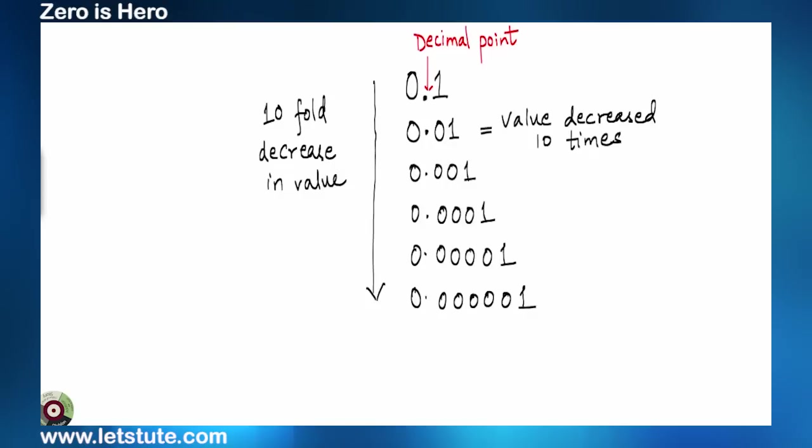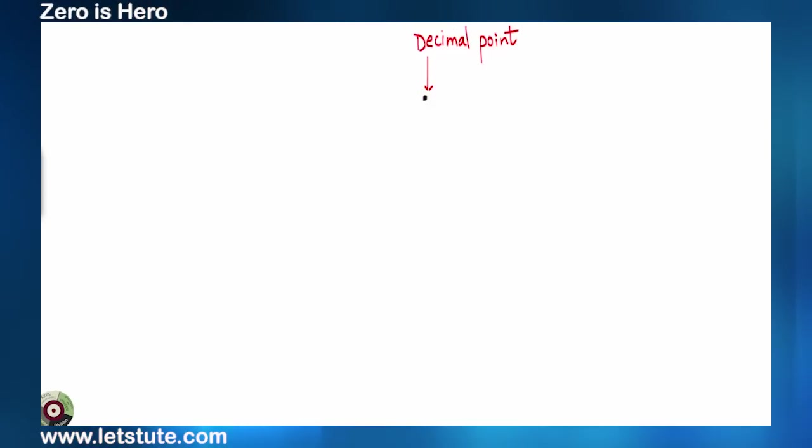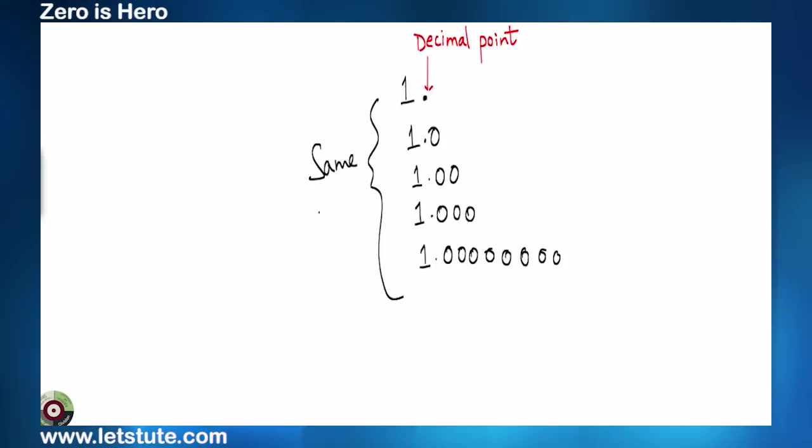So, till now we saw the impact of zero when decimal was after zero. Now, what if the decimal is after the number one? Will it change the number? No, it won't. You add as many zeros you want by putting a decimal point after one. The number will still remain same.